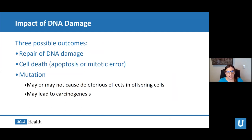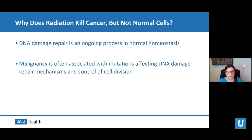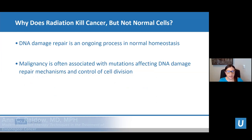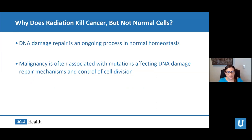The impact of DNA damage has three potential outcomes: the cell can repair the damage, the cell can die through apoptosis or mitotic error, or a mutation can occur — which may or may not have a deleterious effect in offspring cells and can unfortunately lead to carcinogenesis. The reason radiation kills cancer cells but not normal cells is that DNA damage repair is an ongoing process in normal cells, whereas cancer cells have accumulated mutations in their DNA damage repair mechanisms and are unable to repair the damage, causing them to die off.